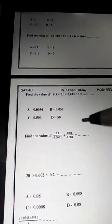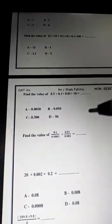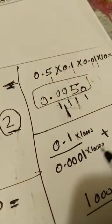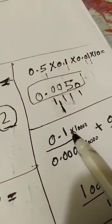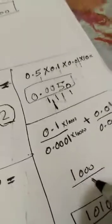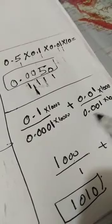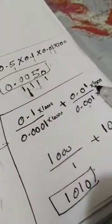Find the value of 0.1 over 0.301 plus 0.01 over 0.201. We have here four digits, so multiply by 10,000 — up and down. 10,000 multiplied by 0.1: cancel one digit with one zero, so we have a thousand. Here we have three digits, so multiply the numerator and denominator by a thousand.